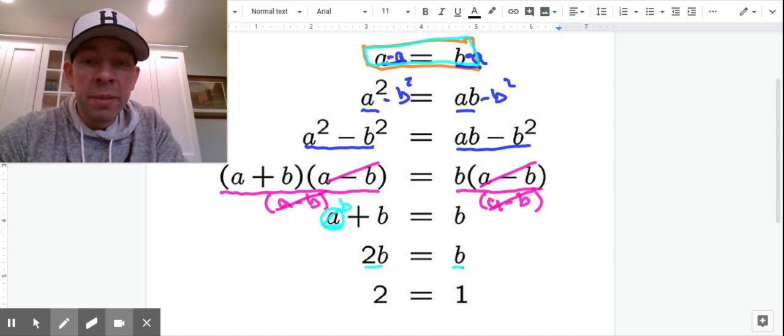And then from there, we divided both sides by B. And once the B is canceled, we were left with this crazy idea that 2 is equal to 1.